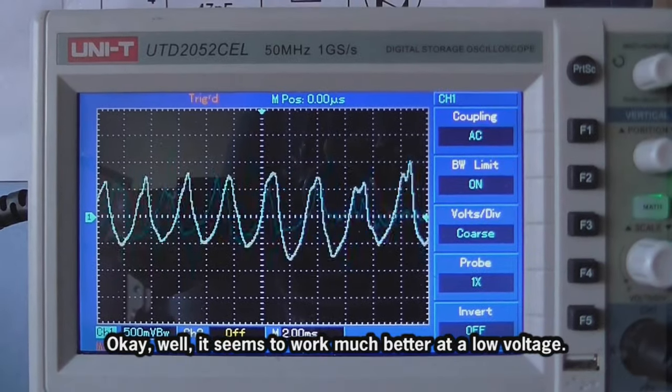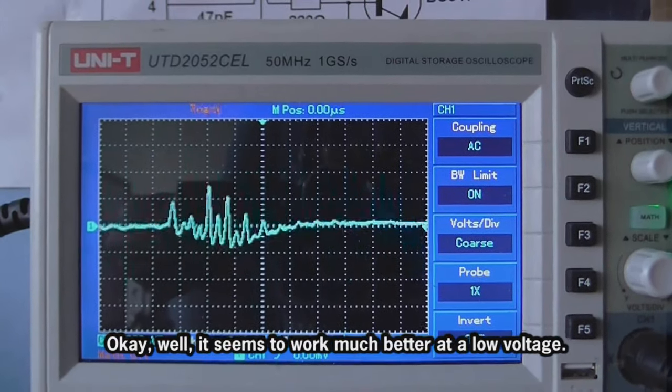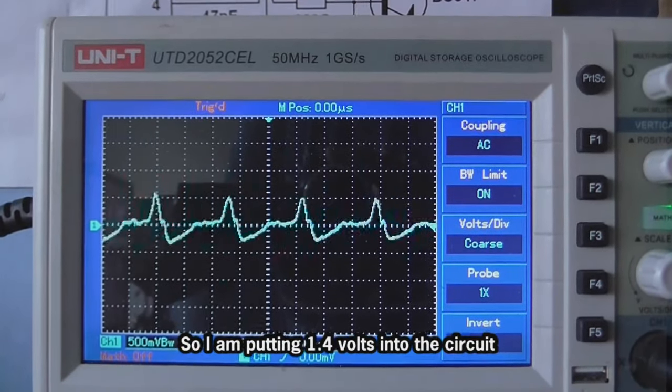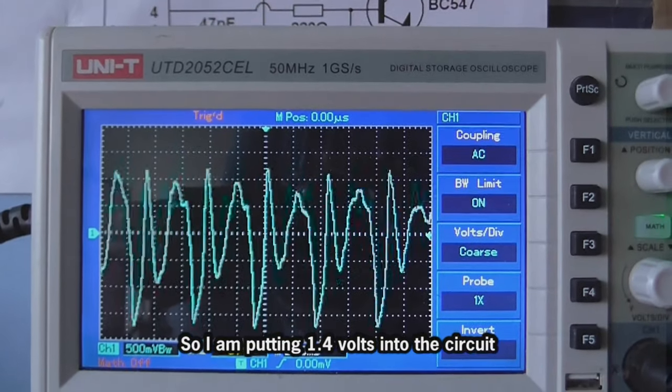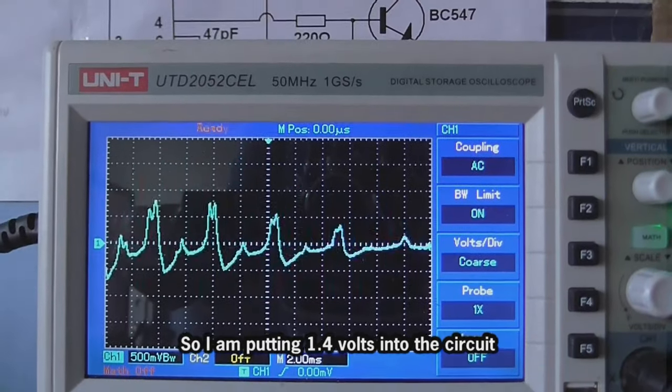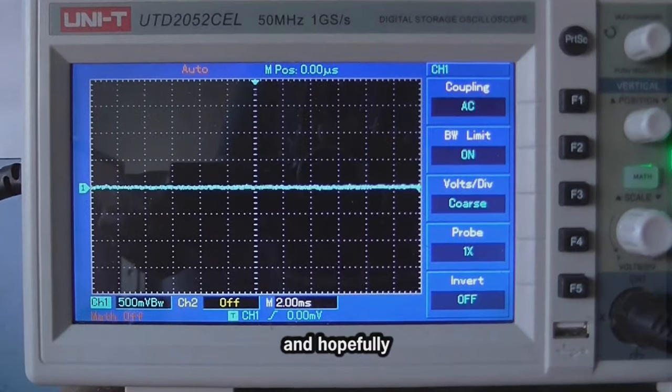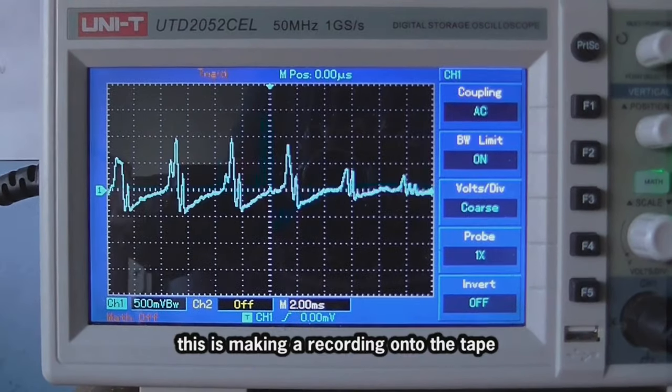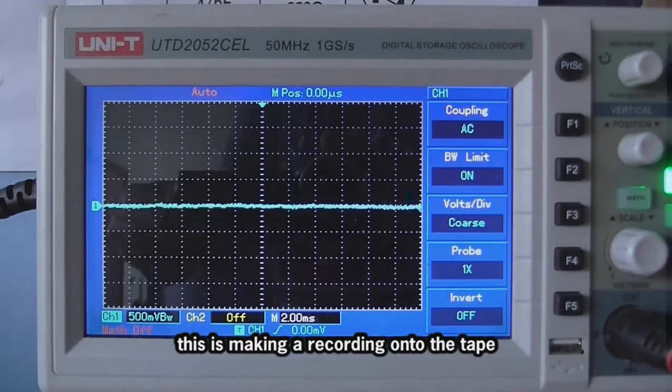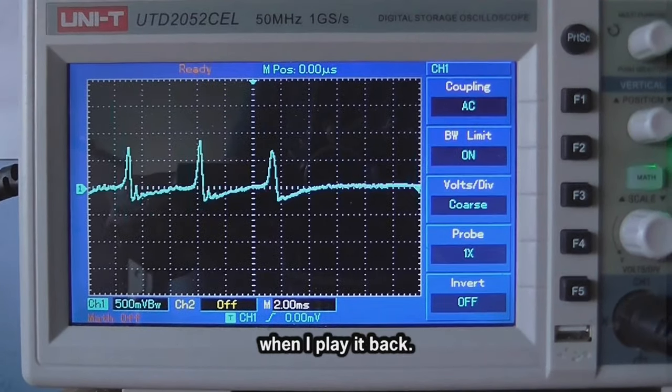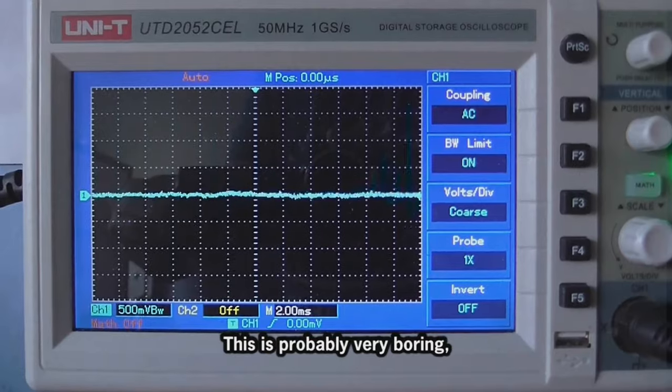Okay, well, it seems to work much better at a low voltage. So, I am putting 1.4 volts into the circuit, speaking right up to the microphone, and hopefully, this is making a recording onto the tape that is intelligible when I play it back.